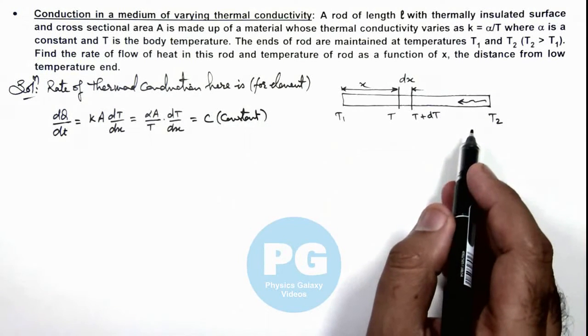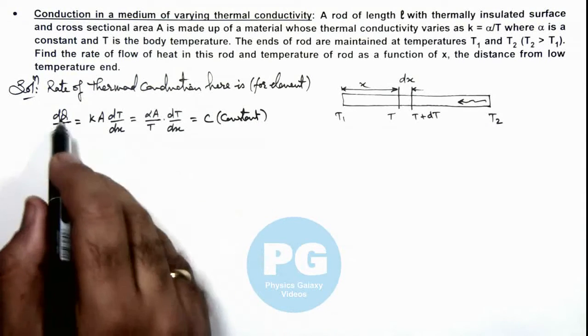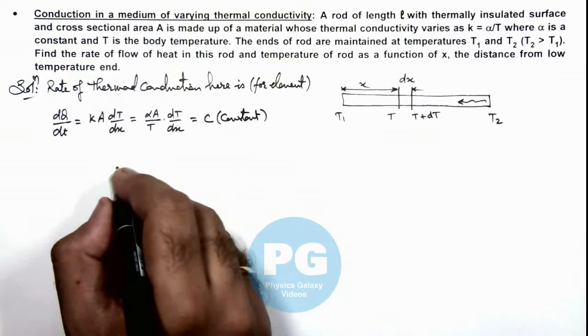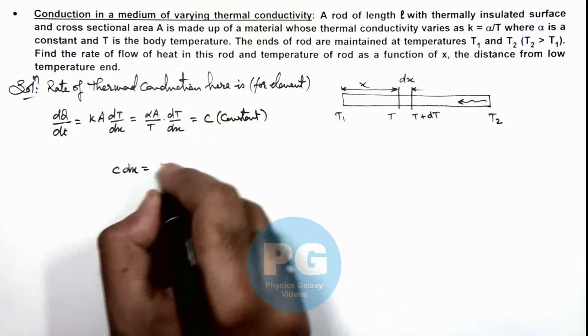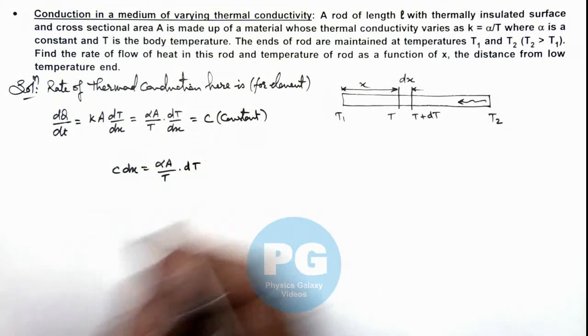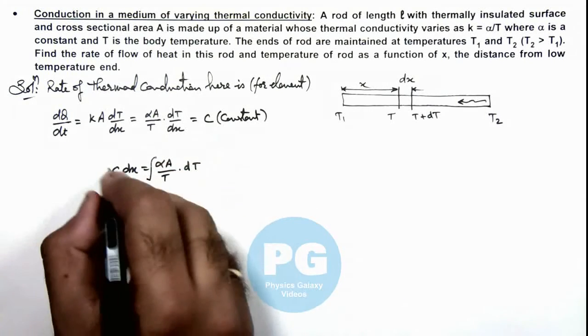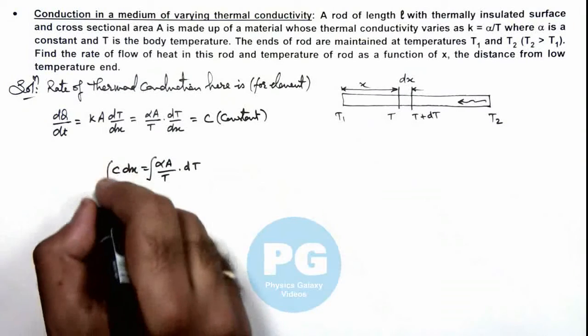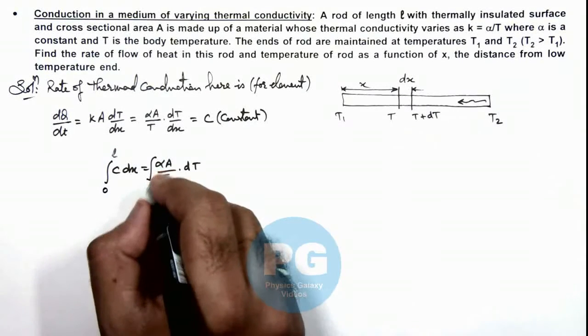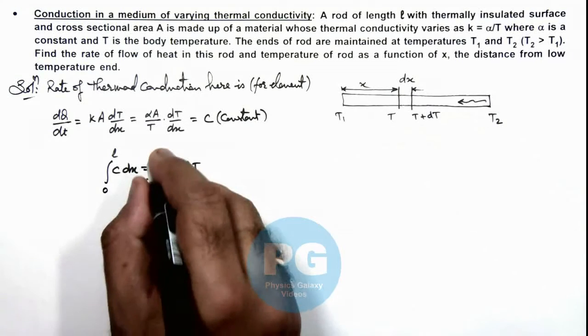Now in this situation we can write this as dQ/dt dx, we can also write this c. So this is c dx is equal to αA/T multiplied by dT. Here if we integrate it, we can integrate x from zero to L for the length of the rod, and temperature are varying from T1 to T2.